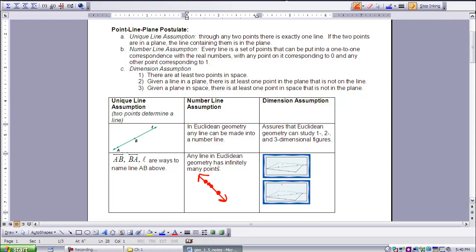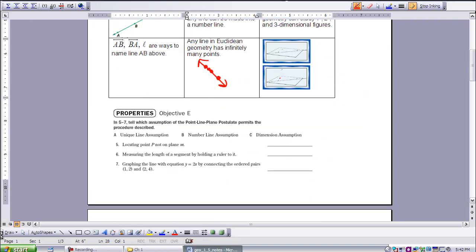The third concept is dimension assumption. I think of this as permission to say that we have dimension in our world. First, there are at least two points in space. If we have a line in a plane, there's at least one point that's not on the line. Given a plane in space, we have a line and a point that can all be on that plane. But we also know that if there's space, we have a point that's not in that plane.